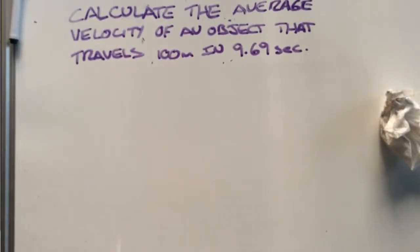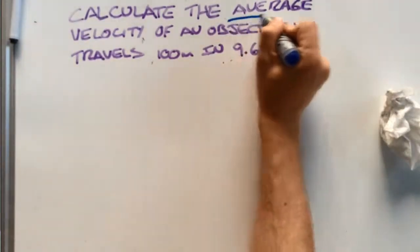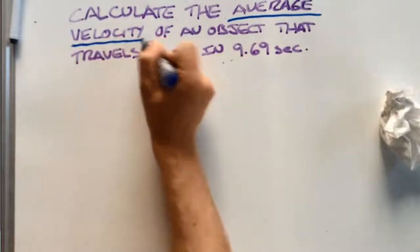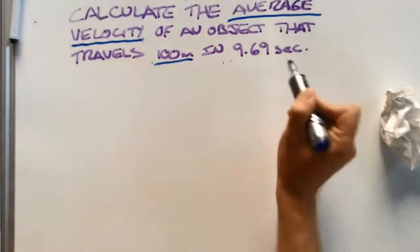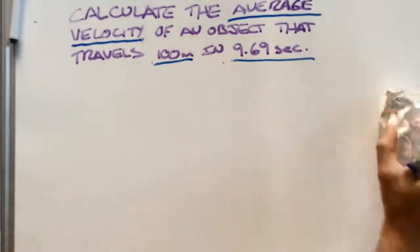So what are we going to do? Well, first we identify the important information. The question is asking us to find the average velocity of something that travels 100 meters in 9.69 seconds.